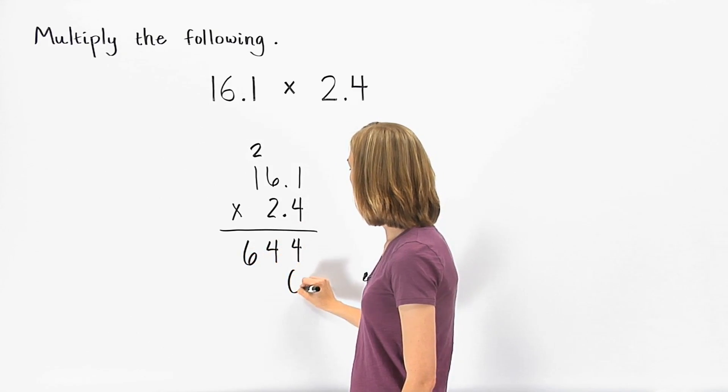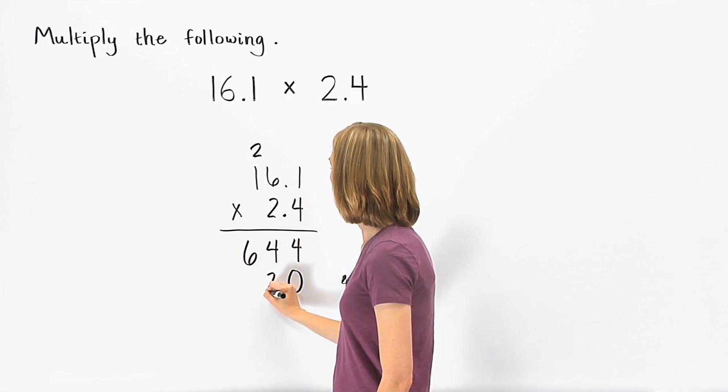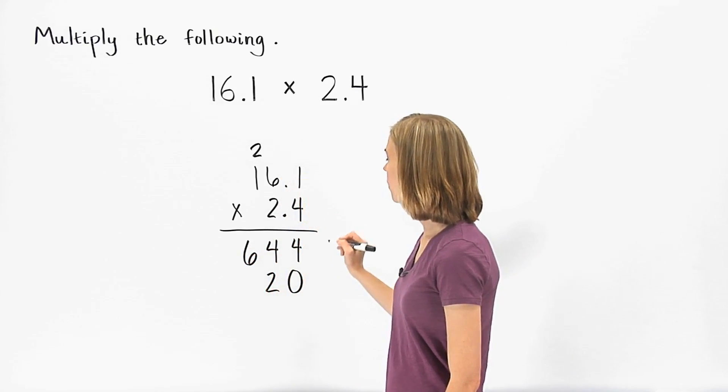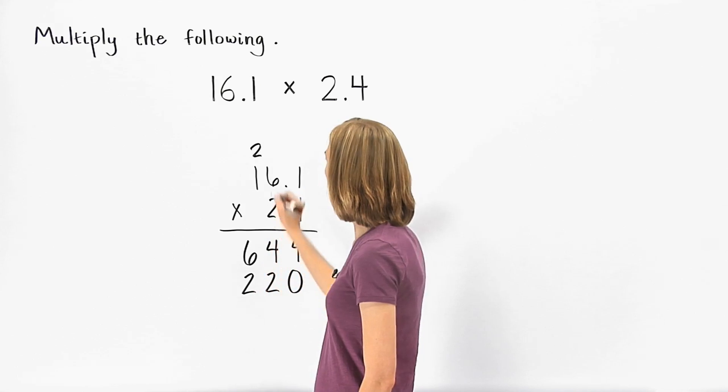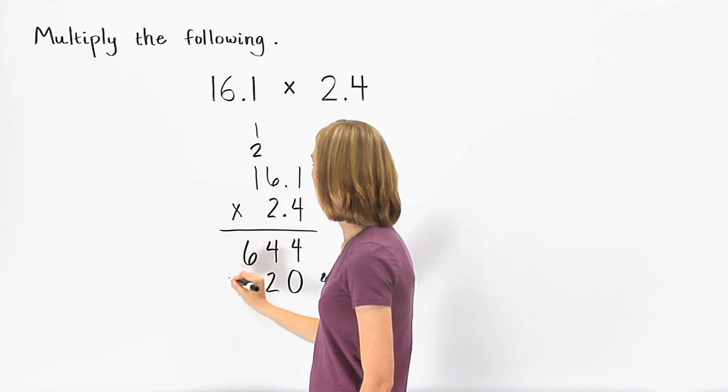Moving to a new row and starting in the tens column, 2 times 1 is 2. 2 times 6 is 12, so we bring down the 2 and carry the 1. 2 times 1 is 2, plus 1 is 3.